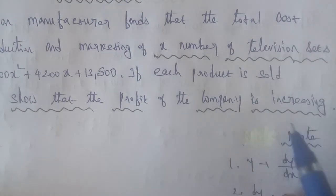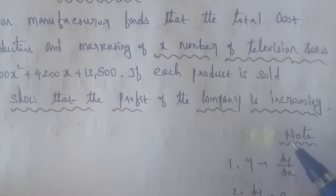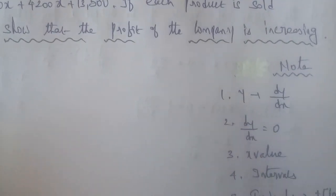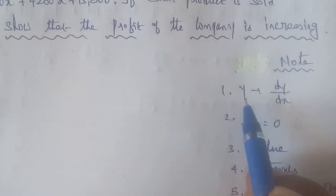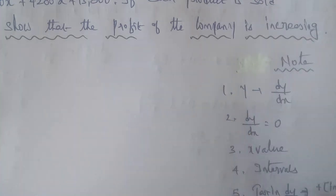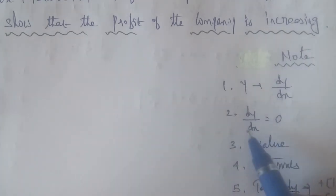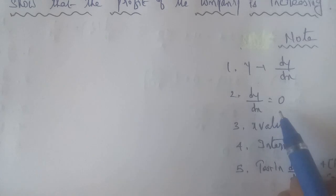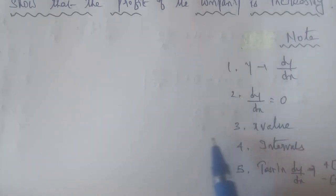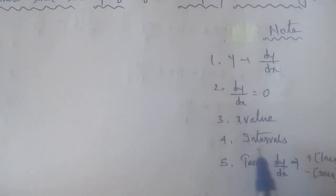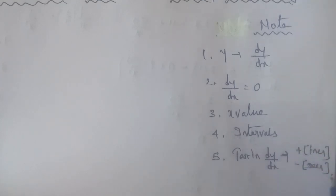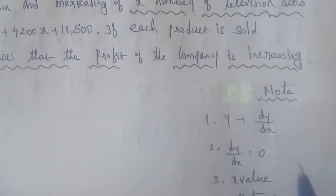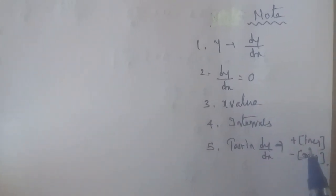To show a function is increasing or decreasing, we differentiate with respect to X to get dy by dx. If dy/dx is greater than 0, it is increasing; if negative, it is decreasing. We apply the interval method — we split the interval and check: positive values indicate increasing, negative values indicate decreasing.